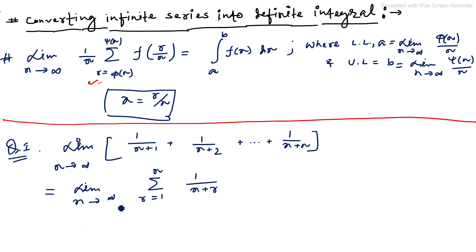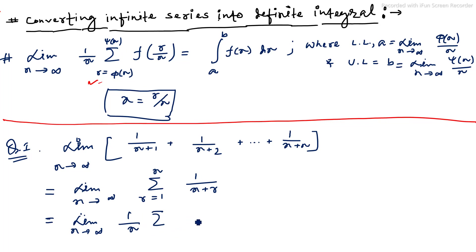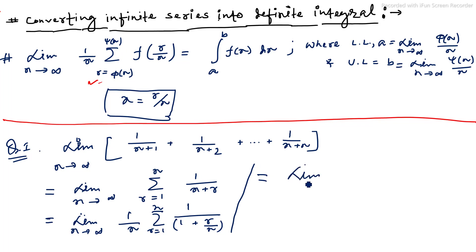Now this is equal to limit n tends to infinity — we need to write this in r/n form. If we take n as common, it looks like (1/n) × summation of 1/(1 + r/n), where r equals 1 to n.